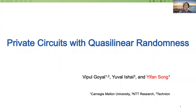Hello, everyone. My name is Ivan Sang. Today, I'm happy to introduce our work, Private Circuits with Quasi-Linear Randomness. This is a joint work with Vipo-Goya and Yuval Ishai.